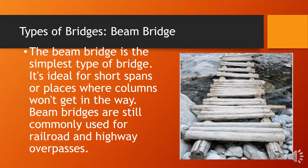Types of bridges. The first type we're going to talk about is a beam bridge. The beam bridge is the simplest type of bridge. It's ideal for short spans or places where columns won't get in the way. Beam bridges are still commonly used for railroad and highway overpasses.